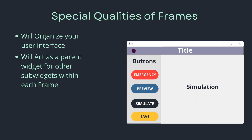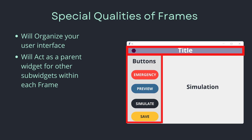Another very nice quality of frames is that they group things associated with one another together. A frame acts as a parent widget for other sub-widgets within it. For example, we have an emergency button, a preview button, a simulate button, and a save button — all sub-widgets belonging to that frame. And the small hexagon logo I added on the left side of the title frame: whenever I move that frame, the title label and logo follow it. That's the parent-child relationship between widgets in a tkinter GUI application.